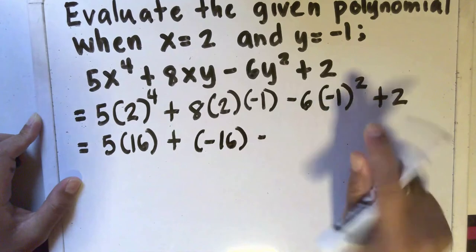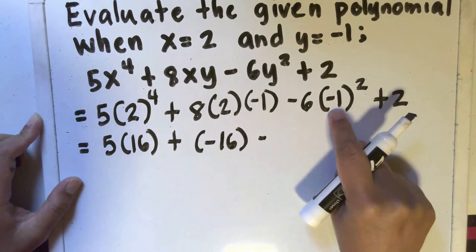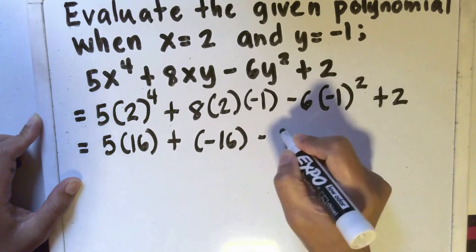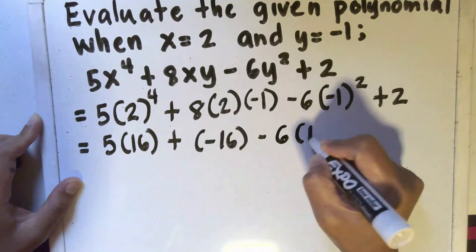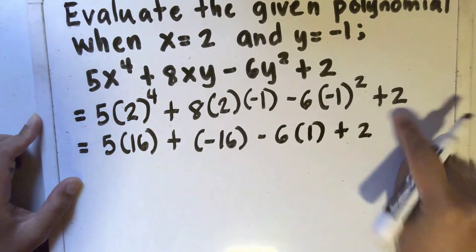And here, before we multiply by 6, we have to simplify negative 1 to the second power first. Well, negative 1 squared is positive 1, so we'll have 6 times 1 plus 2. We don't need to do anything here, we just need to copy that.